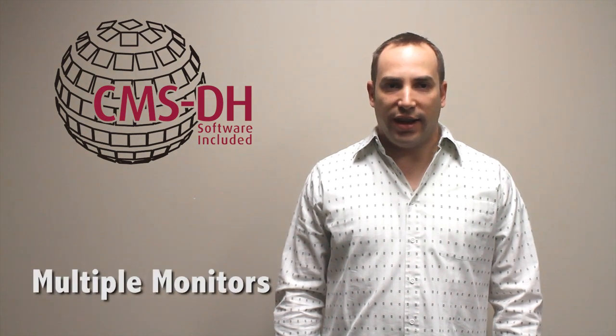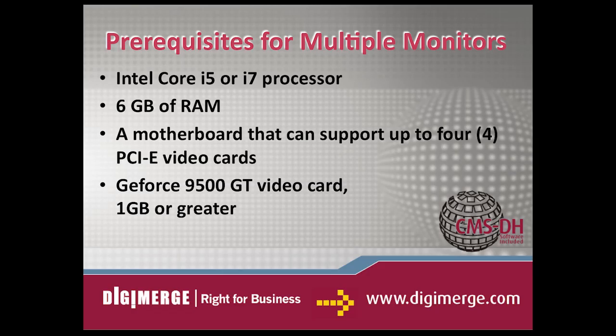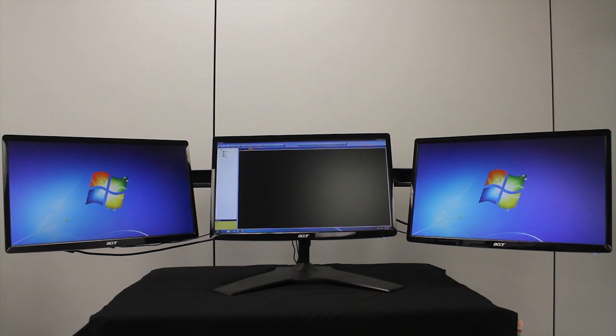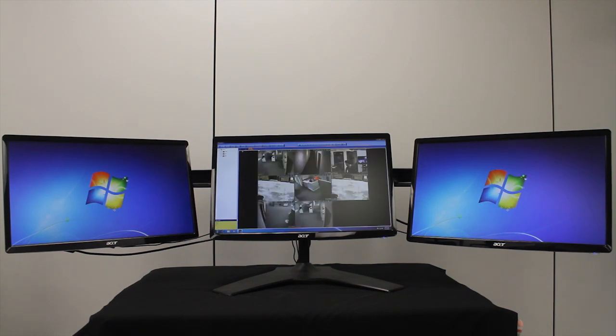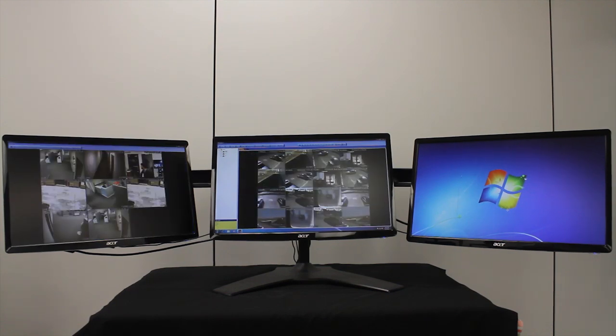The final item we'll cover in this video is running CMSDH on multiple monitors. CMSDH can support a maximum of 8 monitors on a single system. However, running 8 monitors is extremely resource intensive. The recommended minimum system specifications for running CMSDH on multiple monitors are: Intel Core i5 or i7 processor, 6 GB of RAM, a motherboard that can support up to 4 PCIe video cards, and a GeForce 9500 GT video card with 1 GB or greater. To run CMSDH on multiple monitors, connect to CMSDH, open the desired DVRs and menus that you wish to view, then drag the desired tabs to different monitors.